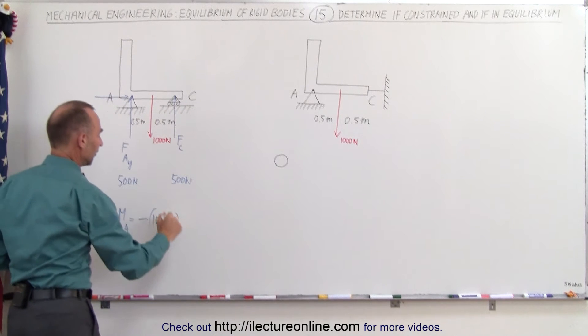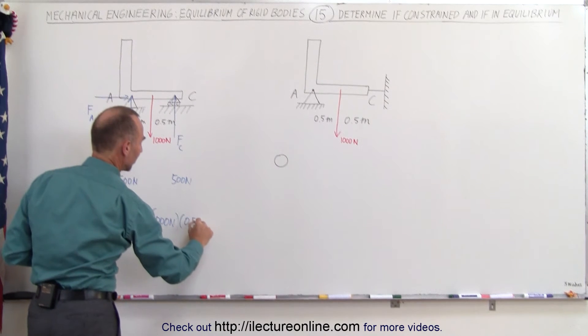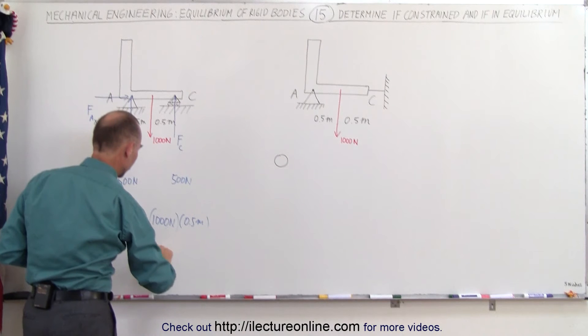multiplied by the moment arm of 0.5 meters, which equals minus 500 newton meters.